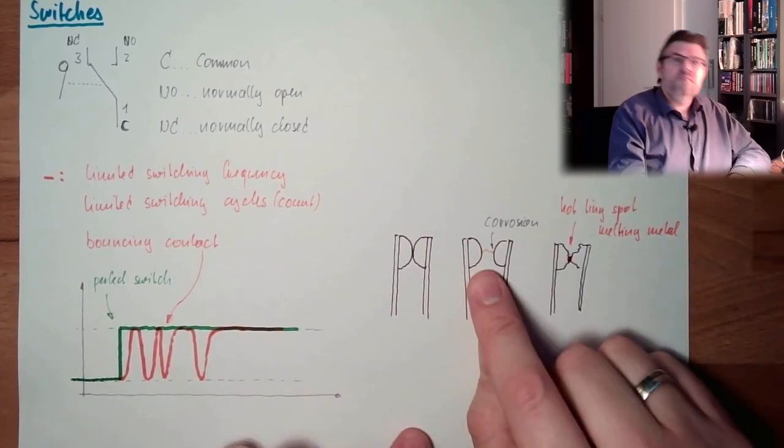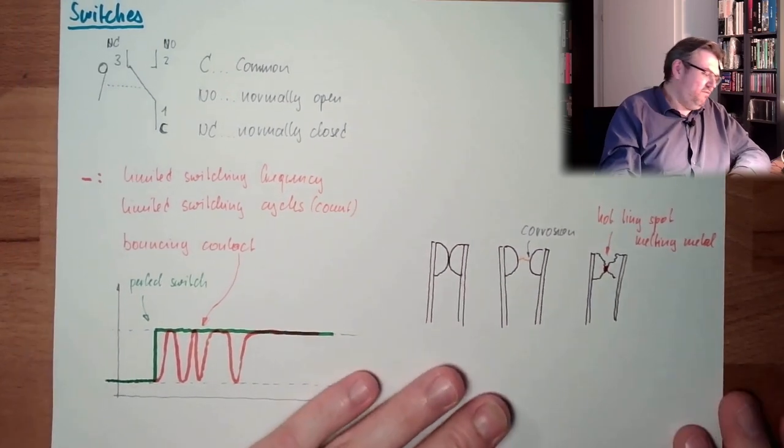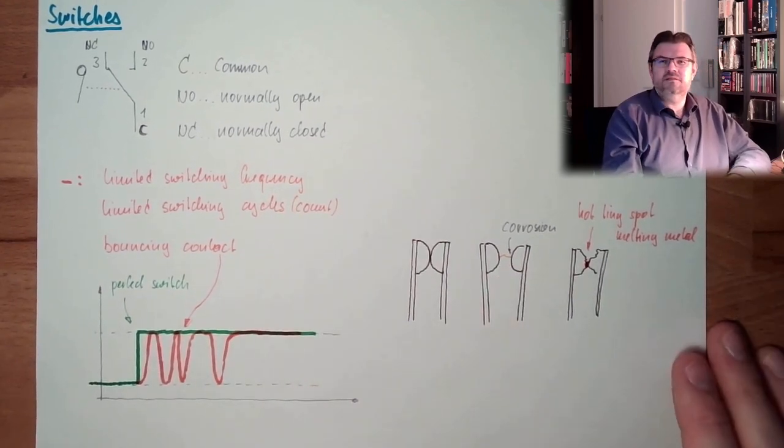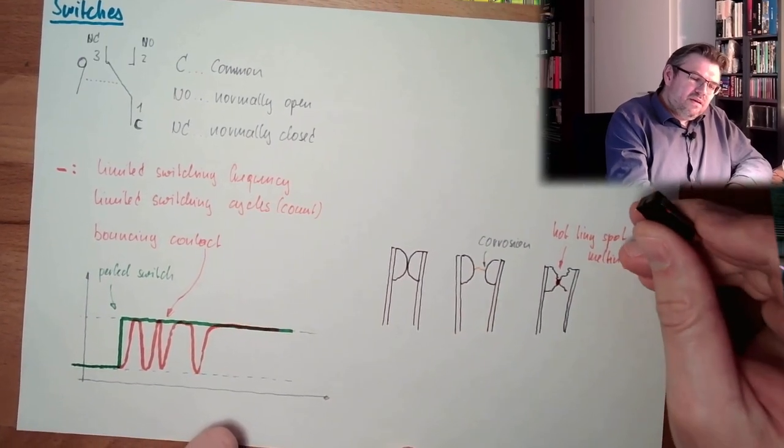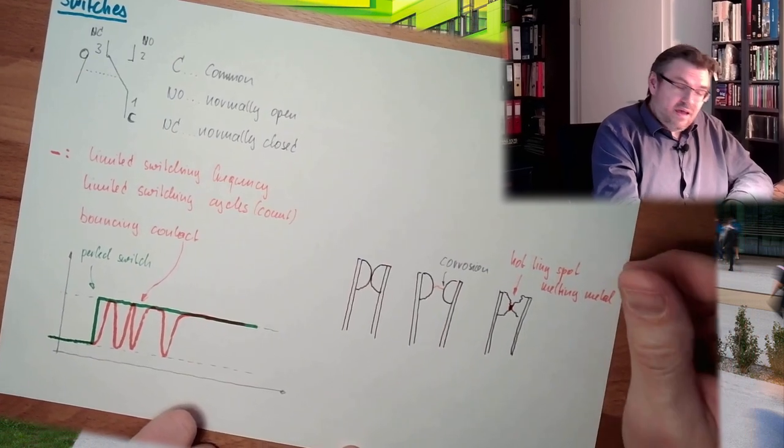So and those sparks, imagine we have an explosive atmosphere. We have an explosive stuff somewhere around us. Spark. It's not that easy. So also these mechanical contacts cause issues in explosive environments.